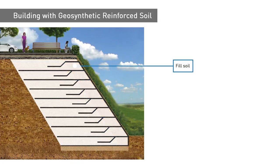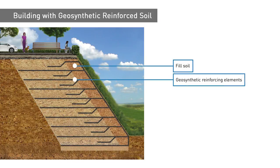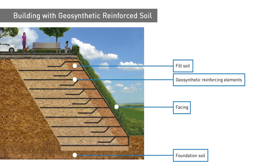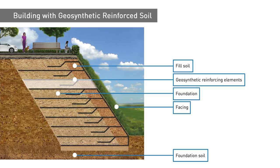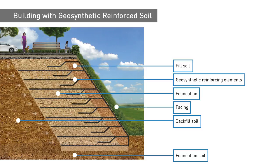Geosynthetic reinforced soil is a composite body composed of granular soil and reinforcing elements made of polymeric materials called geosynthetics or geotextiles. The geosynthetics are incorporated into the soil in individual horizontal layers that can be spaced above each other vertically. This results in a composite wall that absorbs and transfers inherent and dynamic loads and the lateral earth pressure of any unreinforced backfill soil.